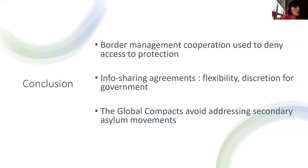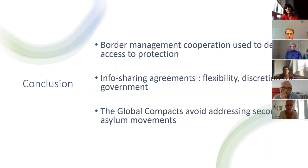To conclude, Canada's recent policies illustrate how border management cooperation — as mentioned in the Global Compact on Migration — is used to deny access to international protection. Interestingly, Canada is governed by a liberal government more open to refugees, championing the two global compacts on migration and refugees at the global level, while at the same time taking measures that close the border and the refugee protection system to certain groups of asylum seekers.